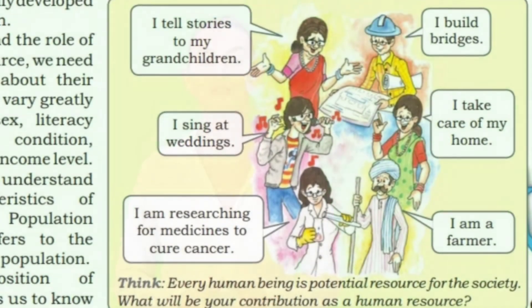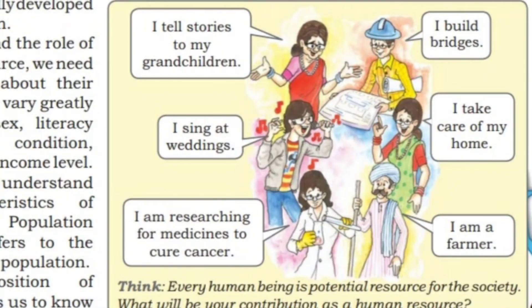Let's try to understand this more clearly through the comic pictures on page 71 in your textbook. Let's read out the conversation. This lady says: 'I tell stories to my grandchildren.' One person says: 'I build bridges.' Another says: 'I sing at weddings.' This lady says: 'I take care of my home.' A man says: 'I am a farmer.' And this lady says: 'I am researching for medicines to cure cancer.'